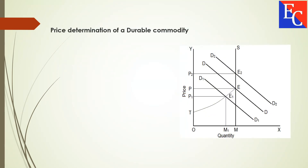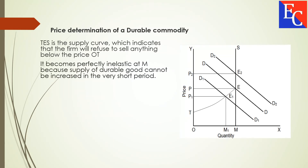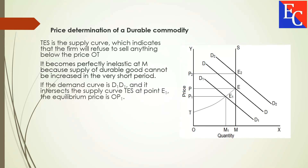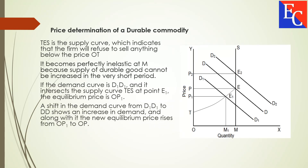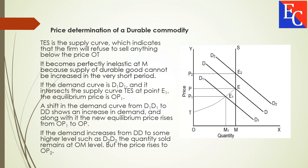This figure shows the price determination of a durable commodity. TES is the supply curve, which indicates that the firm will refuse to sell anything below the price OT. It becomes perfectly inelastic at M because the supply of durable goods cannot be increased in the very short period. If the demand curve is D1-D1 and it intersects the supply curve TES at point E1, the equilibrium price is OP1. A shift in the demand curve from D1-D1 to DD shows an increase in demand, and the new equilibrium price rises from OP1 to OP. If demand increases to D2-D2, the quantity sold remains at OM level and the price rises to OP2.